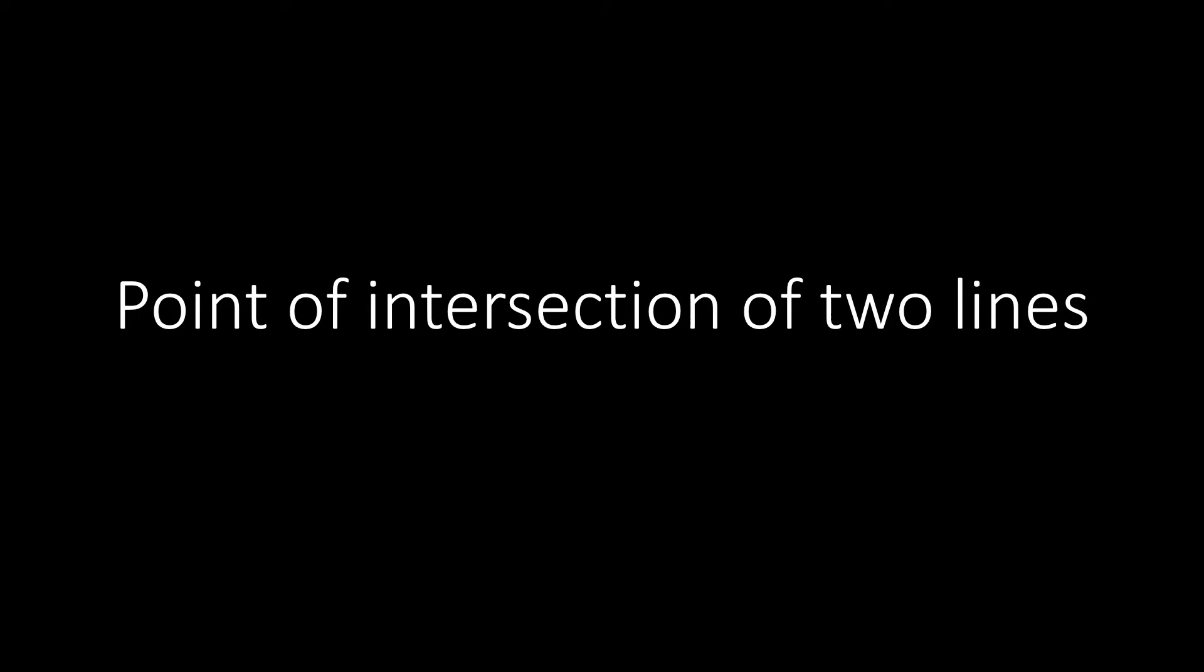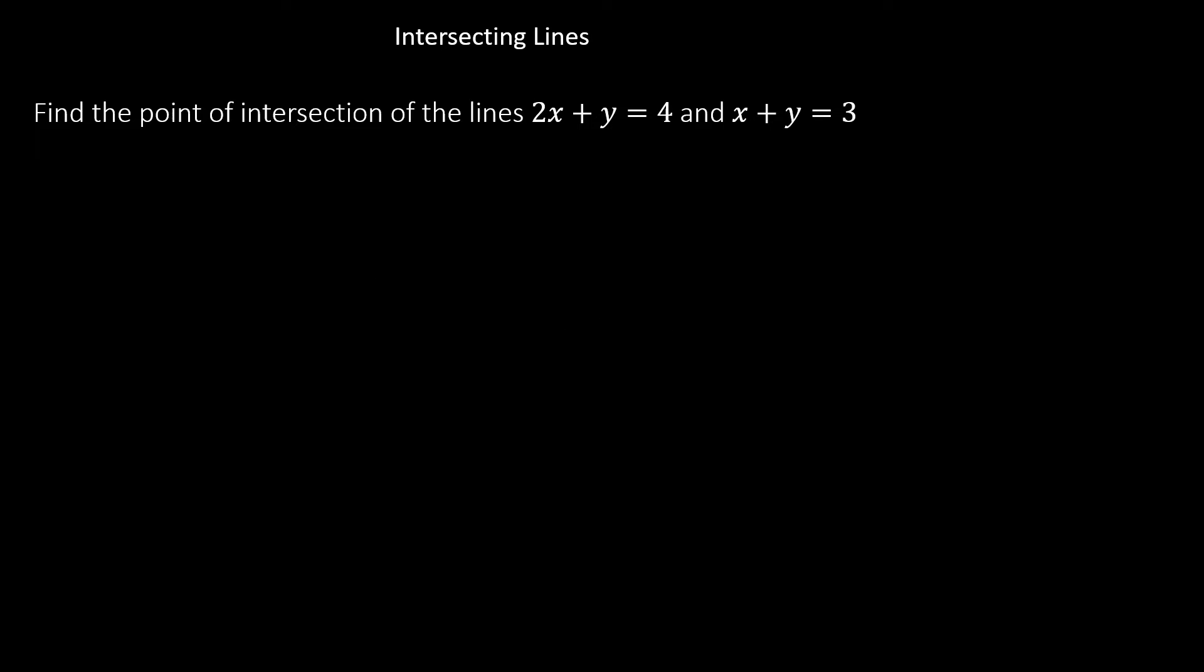In this tutorial, we'll be talking about how to find the point of intersection of two straight lines. If we have to find the point of intersection of two lines that intersect, what we do is to solve simultaneously the two equations of the lines that intersect.